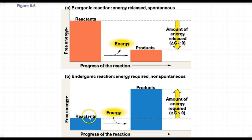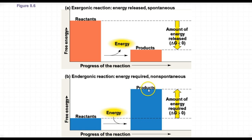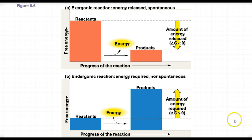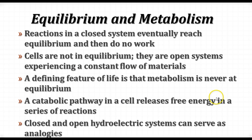Endergonic reactions require an input of energy. You start off with the reactants in a lower energy state, then you add energy, and the products end up in a higher energy state. The amount of energy required here is a positive value — delta G is greater than zero. So they're definitely non-spontaneous.